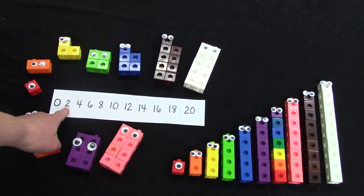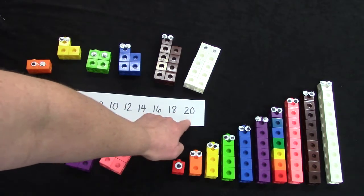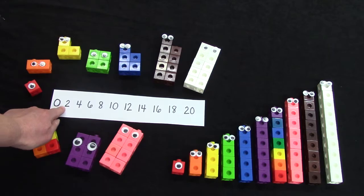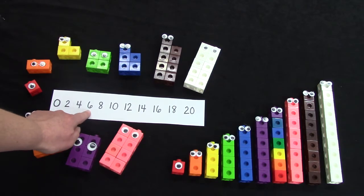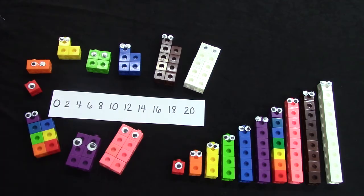These numbers, 0, 2, 4, 6, 8, 10, 12, 14, 16, 18, and 20, these are our even numbers. Even numbers end with the number 0, 2, 4, 6, or 8. Even numbers always have a buddy and I would like us to take a closer look at that.